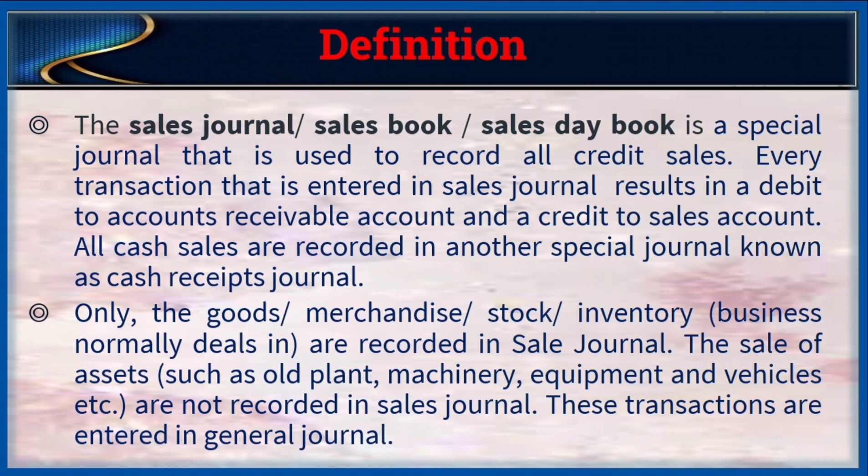Definition of sales journal: the sales journal, also called sales book or sales day book, is a special journal used to record all credit sales. Every transaction entered in the sales journal results in a debit to accounts receivable and a credit to sales account. All cash sales are recorded in another special journal known as the cash receipts journal. Only goods, merchandise, stock, or inventory that a business normally deals in are recorded in the sales journal. Sales of assets such as old plant, machinery, equipment, and vehicles are not recorded in the sales journal — these transactions are entered in the general journal.